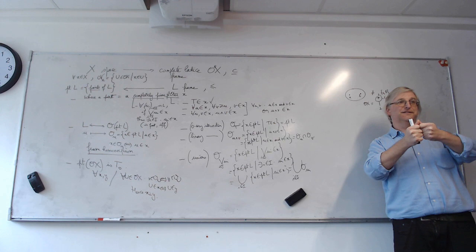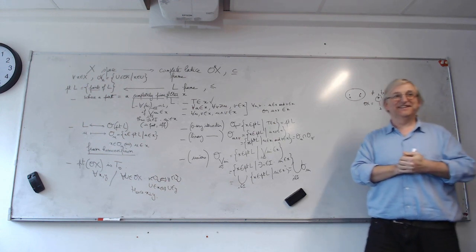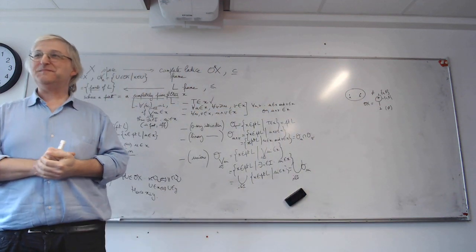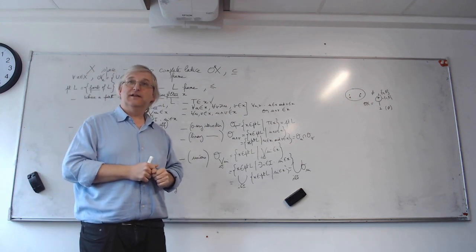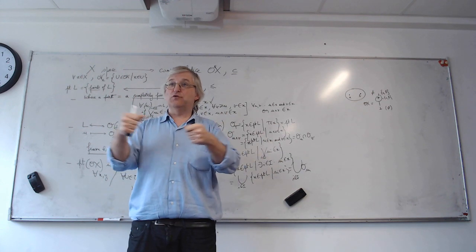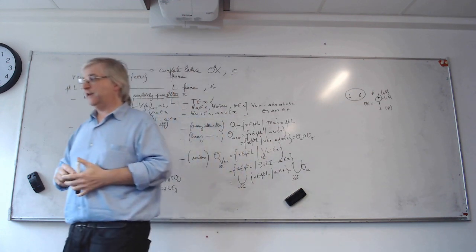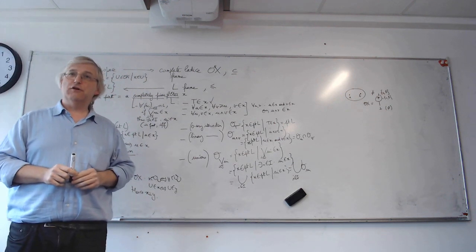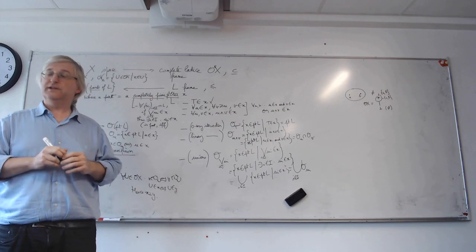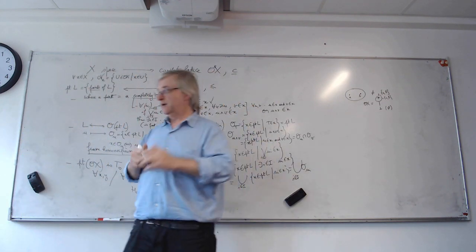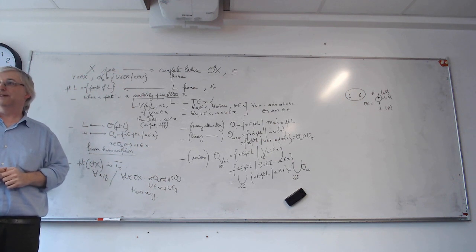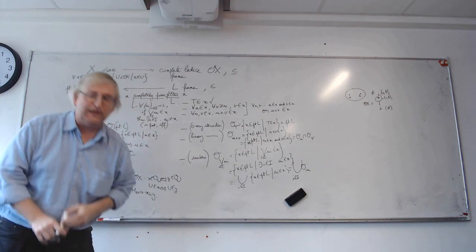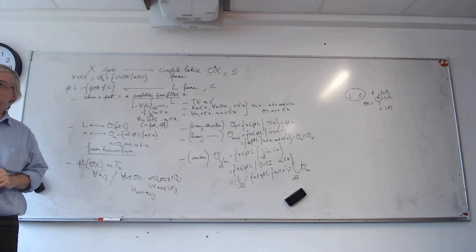There is a construction that starts from a general space, not necessarily T0, and collapses all indistinguishable elements into one — that's the T0 quotient of a space. It has a universal property in category theory with respect to the category of T0 spaces. And that does it in particular, but there are other things that may go wrong. Even if you start from a T0 space, you may fail to retrieve the original space x.